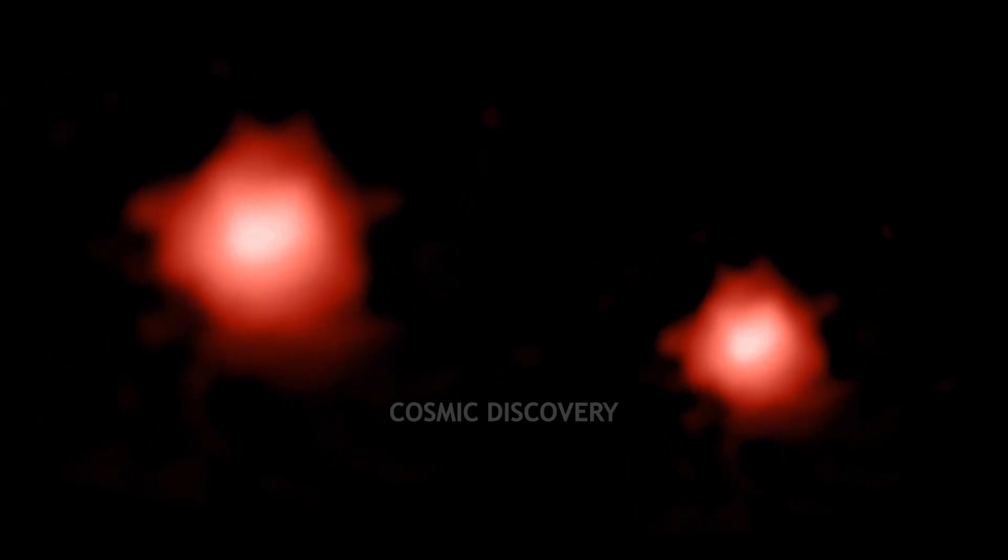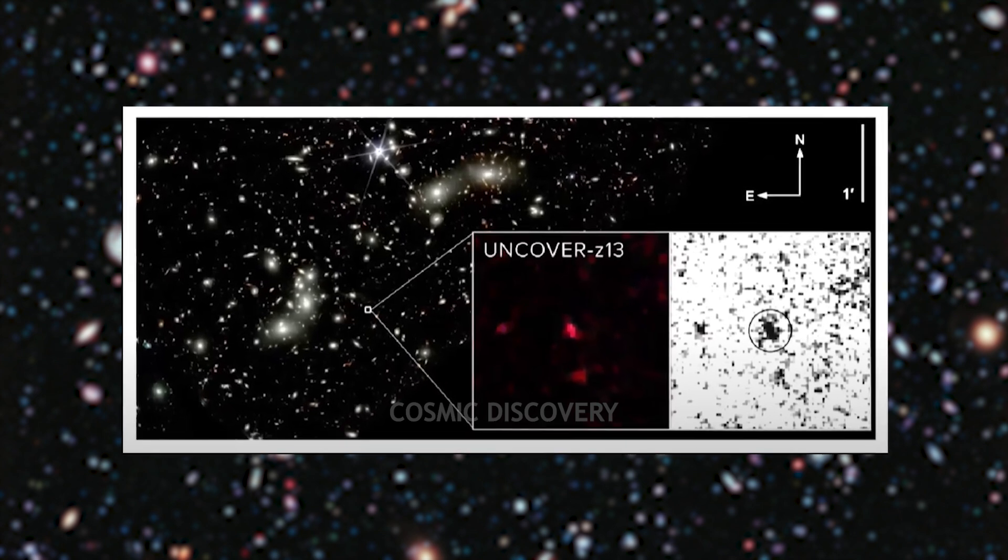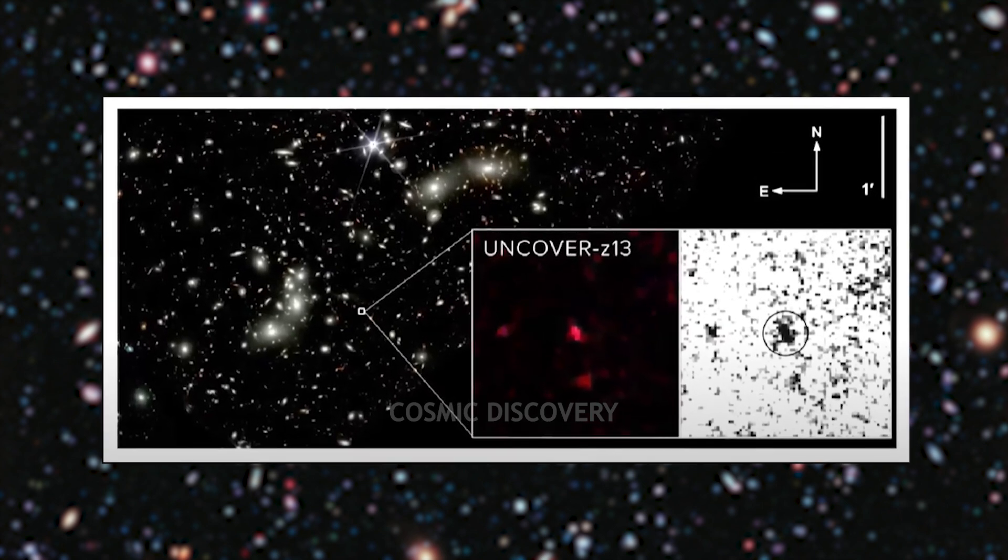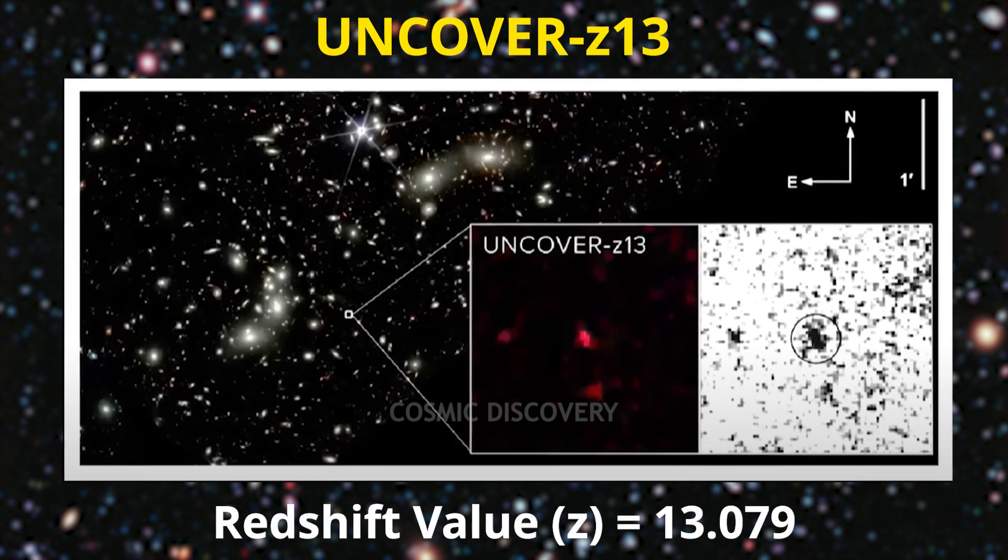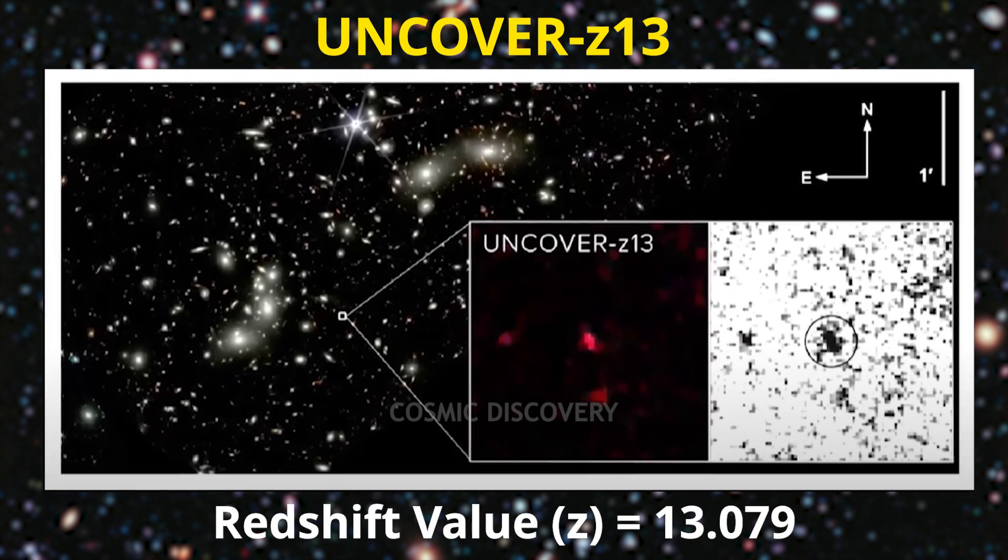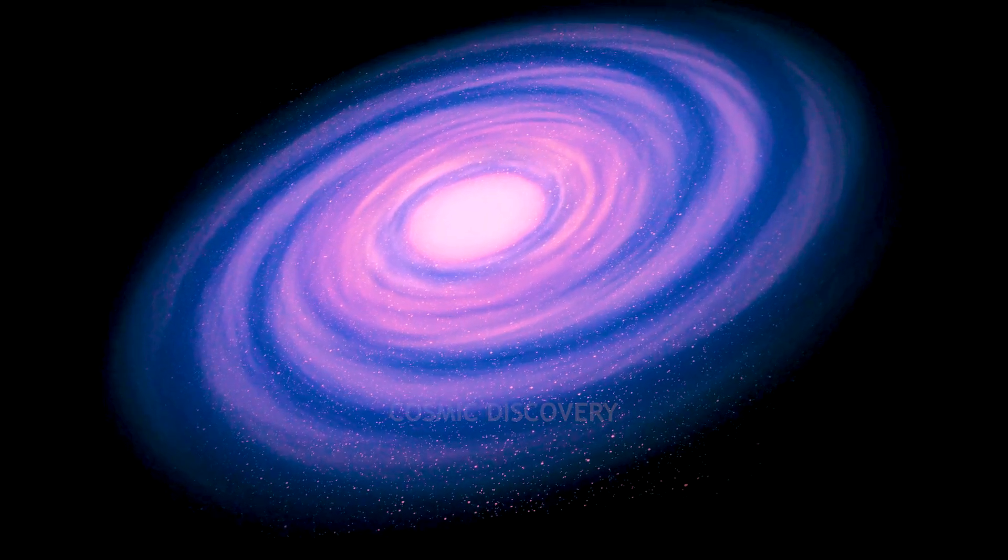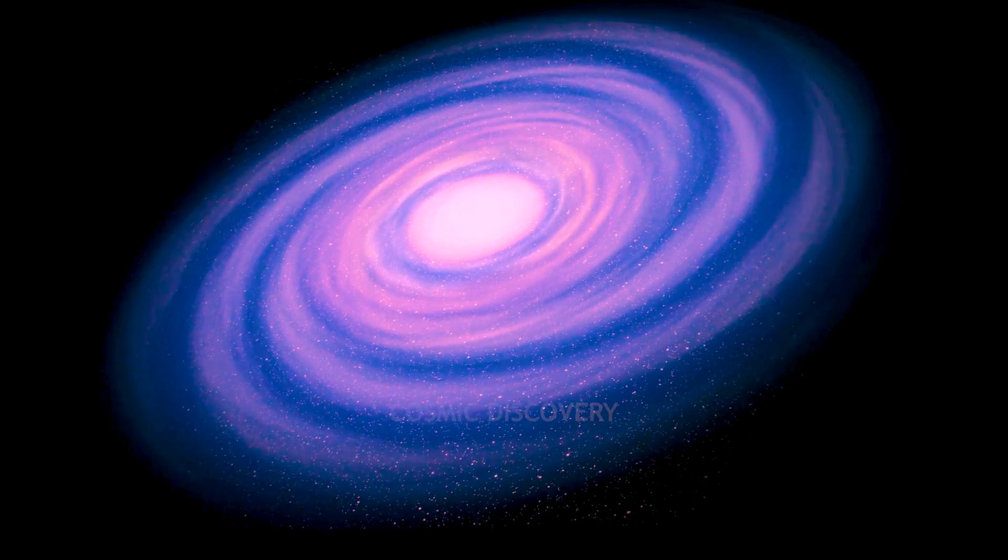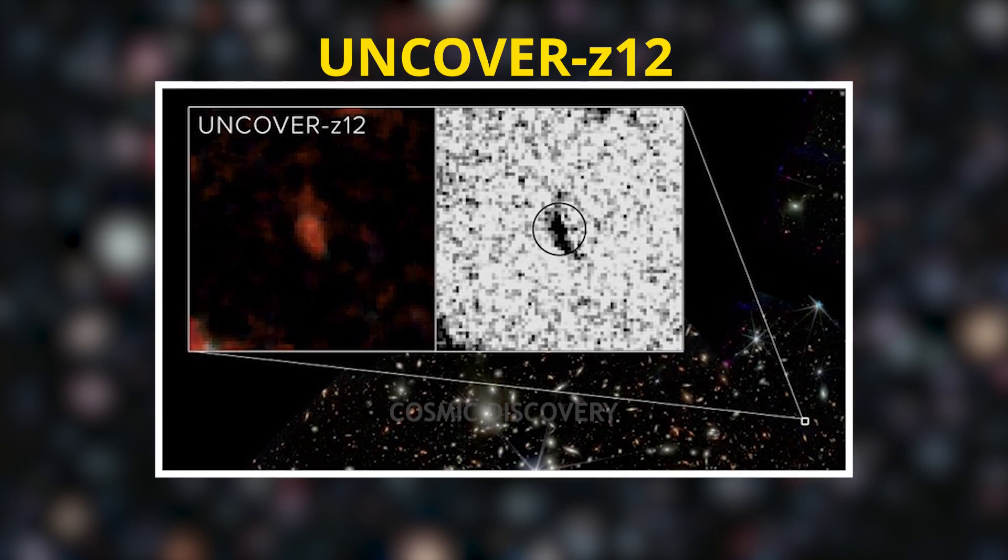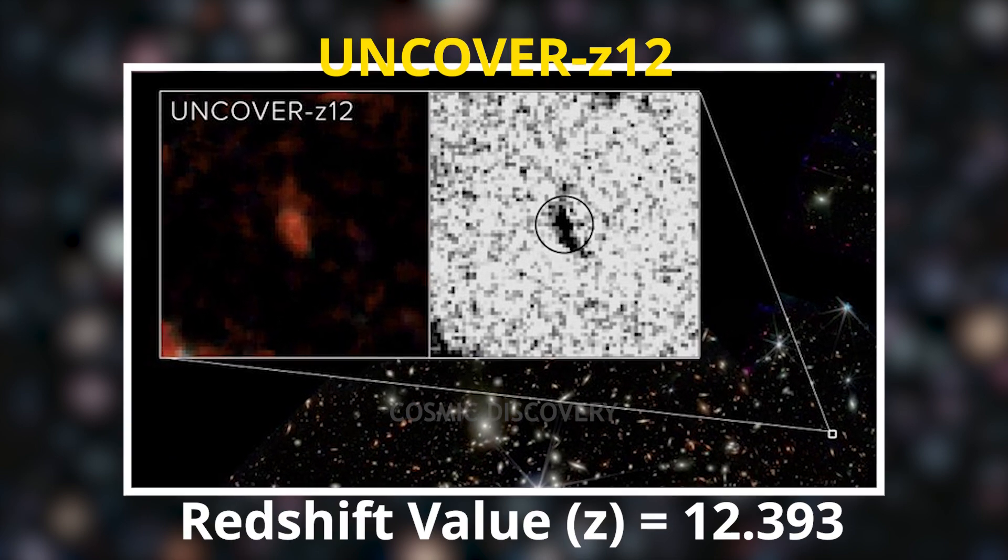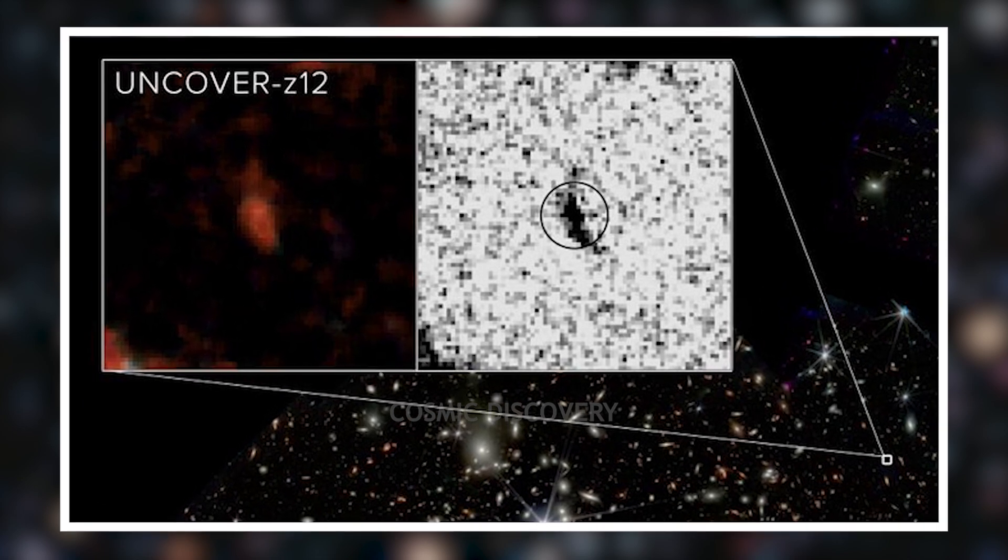Absolutely. The eagle-eyed James Webb Telescope has recently identified two galaxies, setting new records as the most distant ever seen. The first, named Uncover Z-13, boasts a redshift of 13.07, indicating that we're observing it as it existed merely 330 million years after the Big Bang. The second discovery, Uncover Z-12, carries a redshift of 12.393, placing it at a mere 350 million years post-Big Bang.